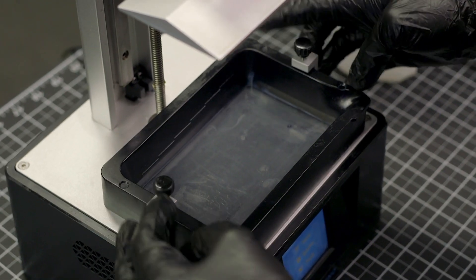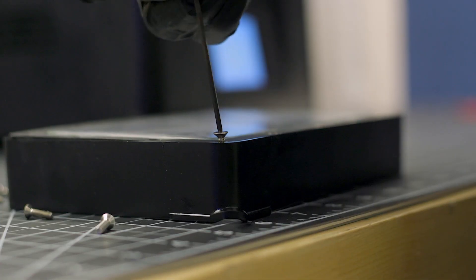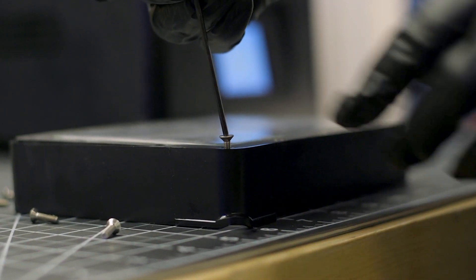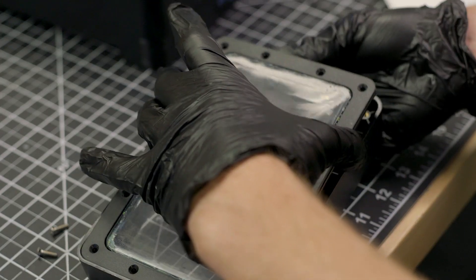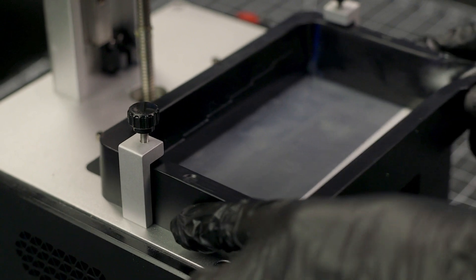As part of regular maintenance, you will need to replace the thin FEP film in the vat when it wears down or gets punctured. To make this process simple and easy, you no longer need to sandwich alternating metal plates and dozens of screws. Instead, you just unscrew the old bracket and pop in a new one to get back up and running with perfect film tension.